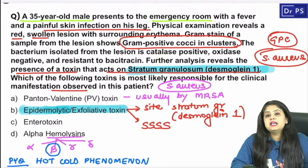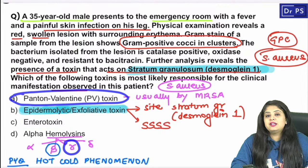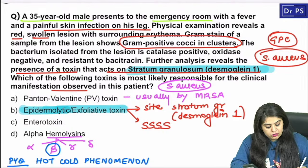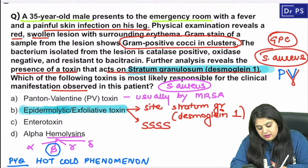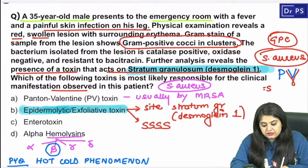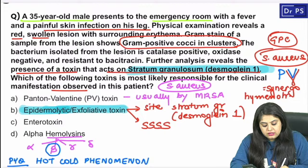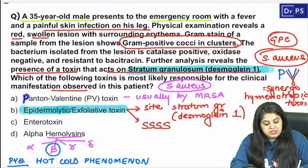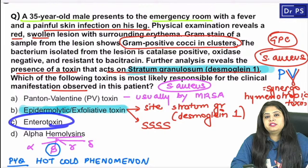Panton-Valentine toxin is released mainly by MRSA (methicillin-resistant Staphylococcus aureus). Panton-Valentine toxin and gamma hemolysin have a similar synergistic action. Together they are known as synergohymenotropic toxin — a previous year question. So synergohymenotropic toxin = PV toxin + gamma hemolysin.